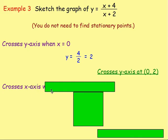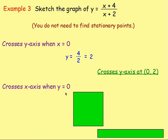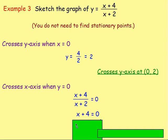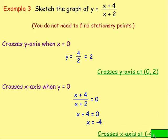The graph crosses the X-axis when Y equals zero. Replacing Y with zero: X plus four over X plus two equals zero. Multiplying both sides by X plus two gives X plus four equals zero, so X equals negative four. Therefore, the graph will cross the X-axis at the point (−4, 0).